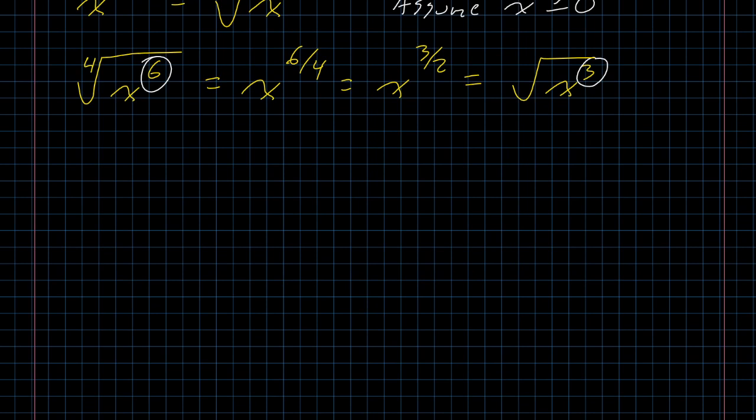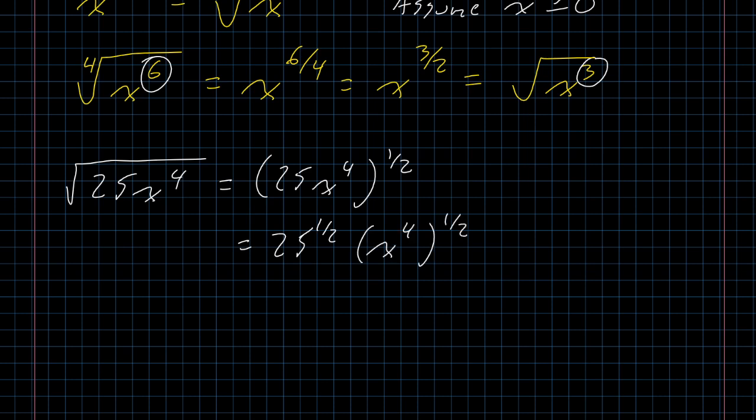The other thing that this allows us to do is evaluate radicals that have more going on. For example, the square root of 25x to the fourth. That's the same thing as 25x to the fourth to the one-half power. Using properties of exponents, that's 25 to the one-half times x to the fourth to the one-half. The square root of 25 is 5, and 4 divided by 2 is 2. So this radical simplifies to 5x squared.